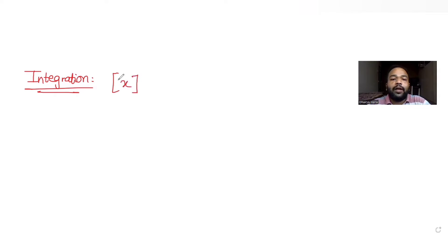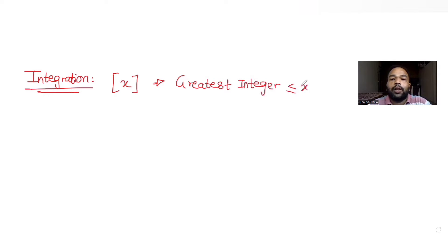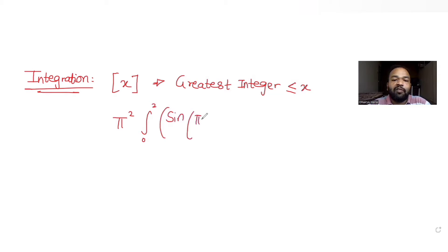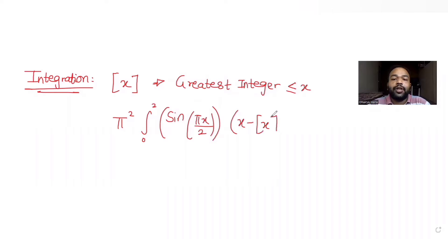The question tells us that x within the square bracket refers to the greatest integer function, which basically gives us the value of the greatest integer that is less than or equal to x. Further, we have been told to find the value of π² times the integral from the limit 0 to 2 of the first function sine of πx/2, and the second function is x minus the greatest integer function of x, which is raised to another greatest integer function of x.